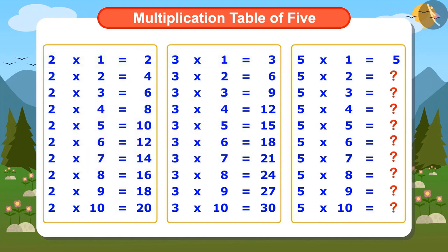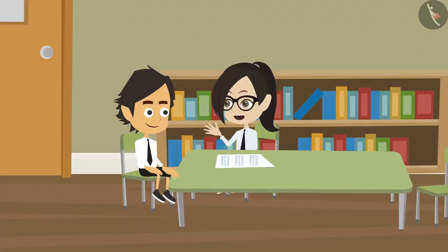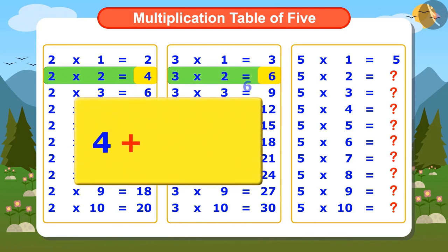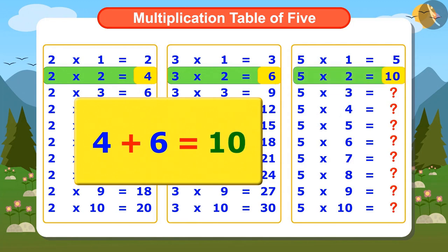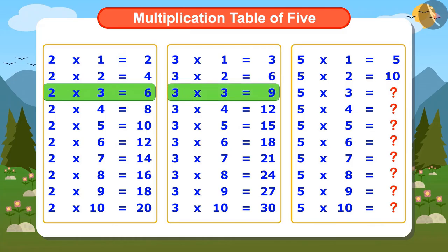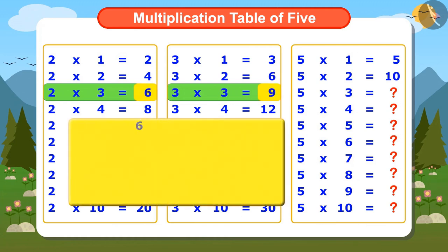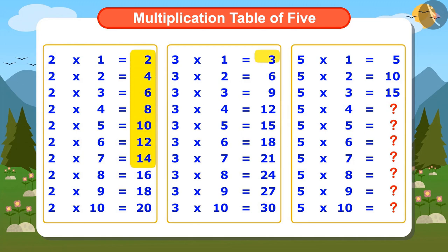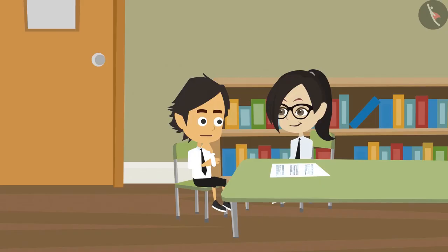We can find the next numbers exactly like this. Look: 2 multiplied by 2 is 4 and 3 multiplied by 2 is 6. If 4 and 6 are added, the answer is 10. This means 5 multiplied by 2 is 10. Then we can find the third number by adding the third numbers 6 and 9 from the tables of 2 and 3, which gives 15. In this way, we can find the complete multiplication table of 5 by adding corresponding numbers from the multiplication tables of 2 and 3.